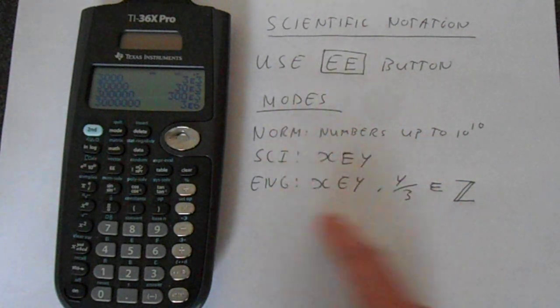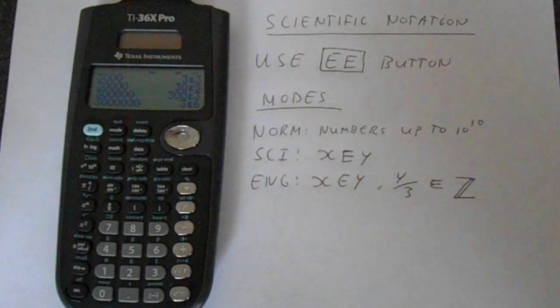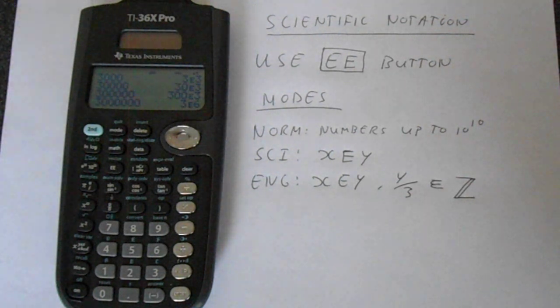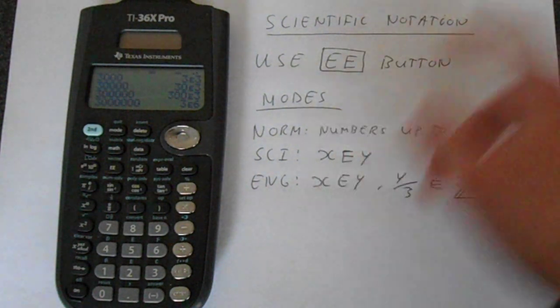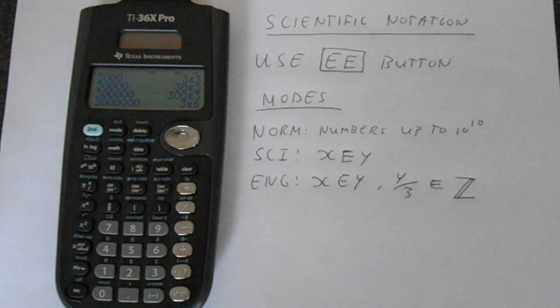So that's your three different choices: scientific, engineering, or normal mode. And use the EE button to access the scientific notation. So you can put in scientific notation. All right, and finally, thank you for watching.